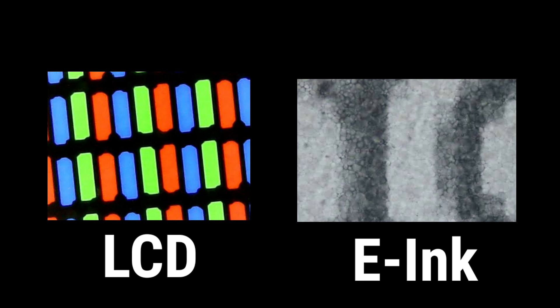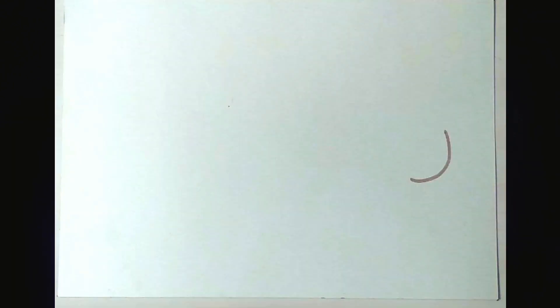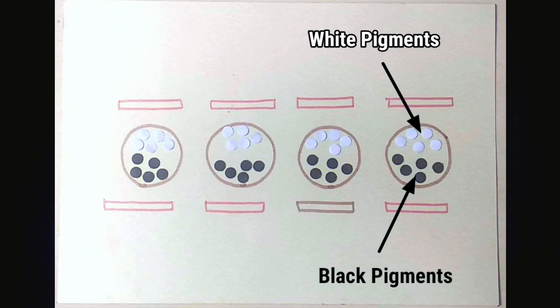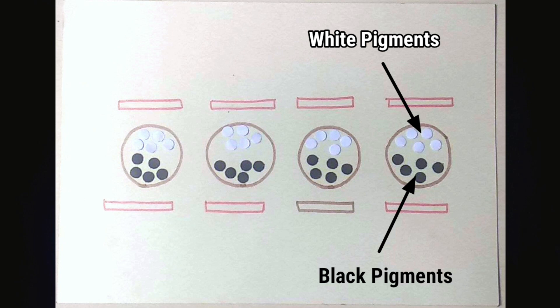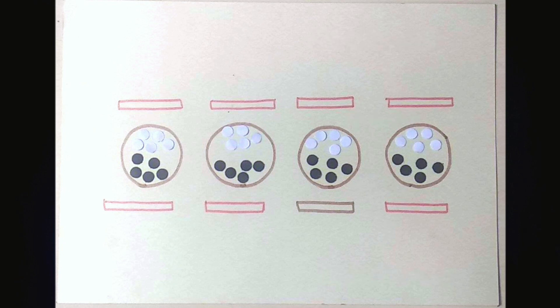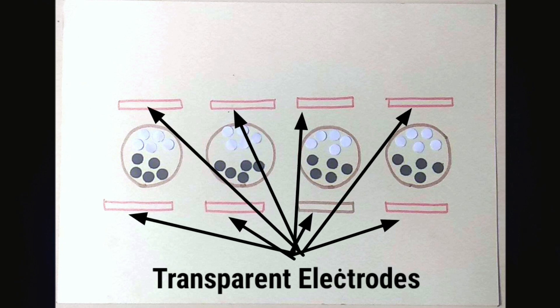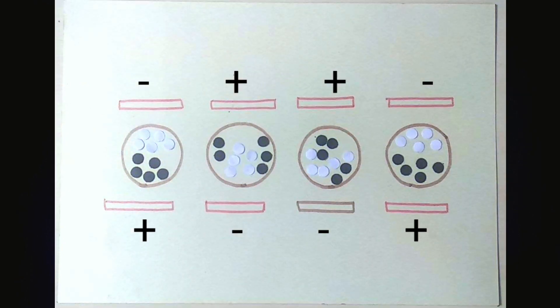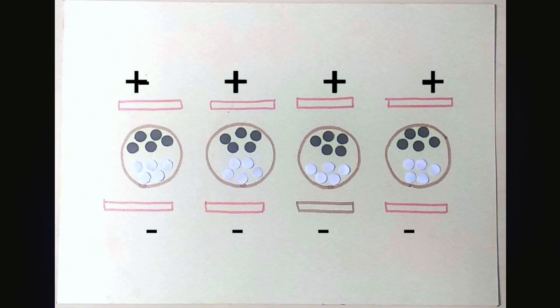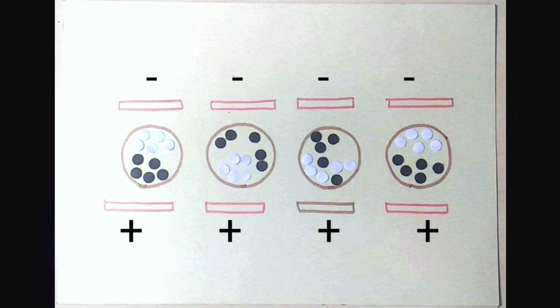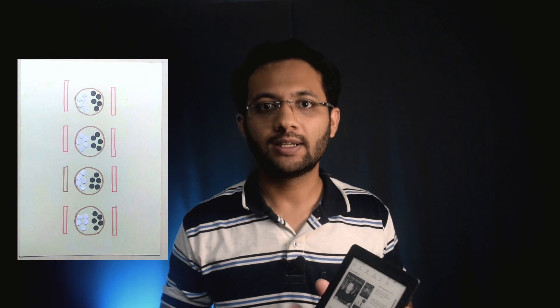In LCD, you can see the screen is made up of tiny pixels that glow. But in e-ink displays, there are no pixels. So what is this display made up of? It is made up of tiny oil capsules that contain black and white pigments — more specifically, titanium dioxide pigments. Black pigments are negatively charged and white pigments have a positive charge. They are placed between transparent electrodes. These electrodes are charged according to the image or text to be shown on the display, and the respective pigments are attracted towards the electrode and your image is displayed.